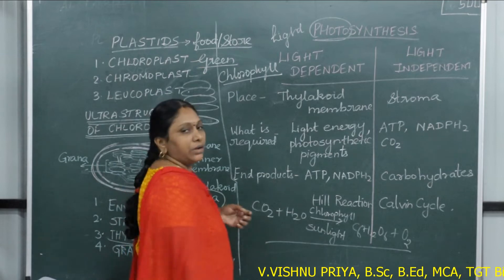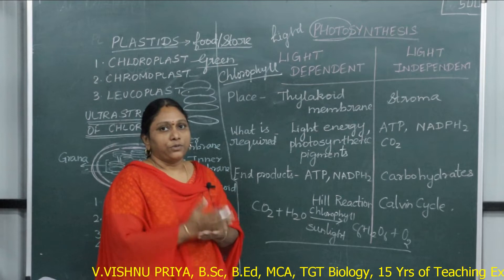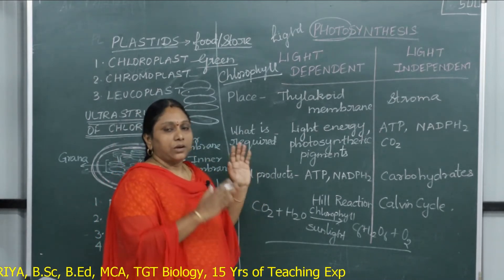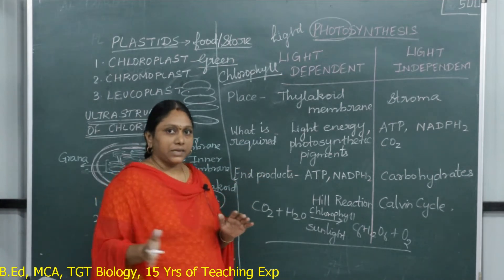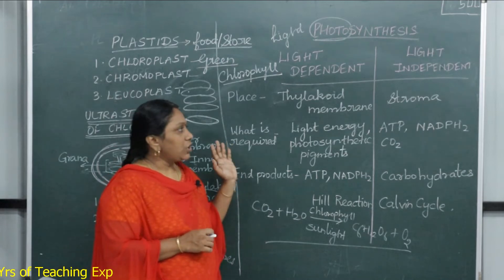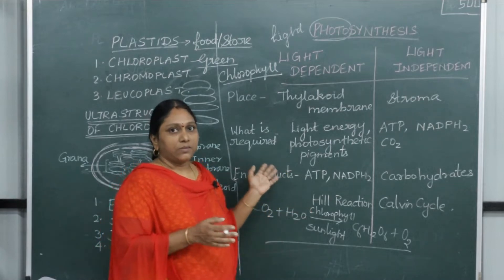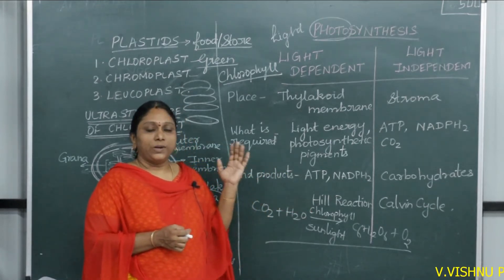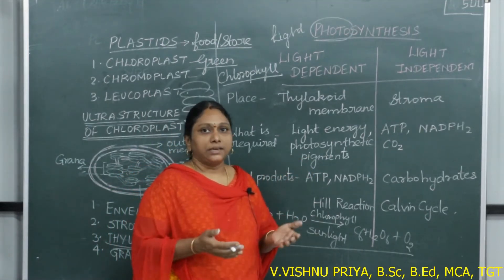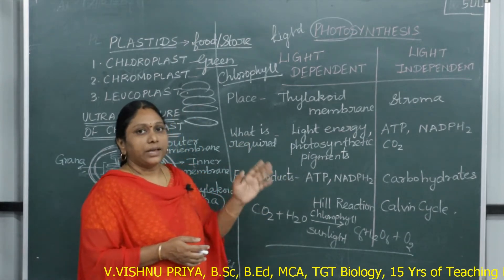Photosynthesis takes place in all the green parts of the plant where chlorophyll is present — even in young green stems. It is not a simple reaction as represented here; the book gives only the outline. When you go to higher classes, you will learn this very complex biochemical process in detail, involving many enzymes and biochemical reactions.